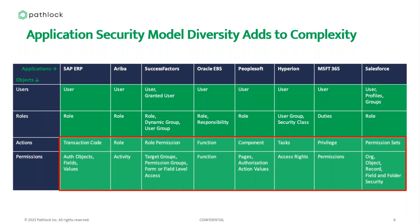To properly administer these applications and report on user access, we need to understand the core activities that each permission and action grants to users. We need fine-grained visibility at the permission level to properly see all risks. Once we multiply this complexity across all applications, we're dealing with a significant challenge. That's why application access governance is so difficult when managing multiple applications.